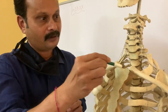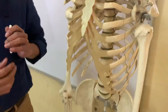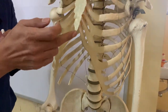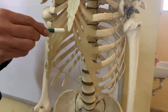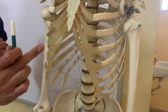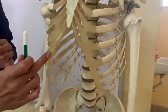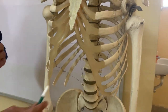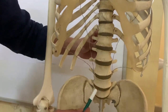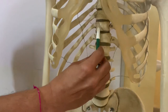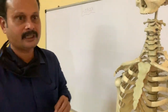Now let us talk about the thoracic outlet. This outlet is formed in front by the infrasternal angle, at the sides by the costal margin. The costal margin is formed by the costal cartilages of the 7th, 8th, and 9th ribs, and posteriorly the 12th thoracic vertebral body. So this forms the boundaries of the thoracic outlet.